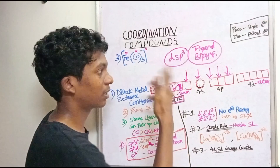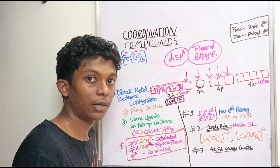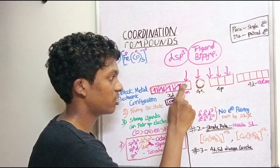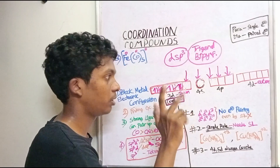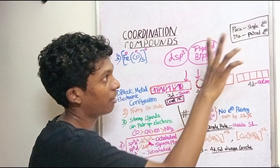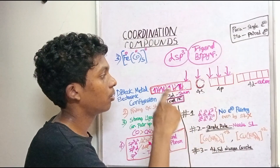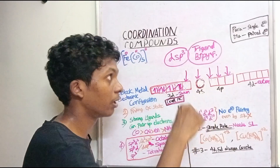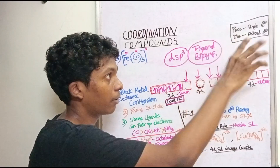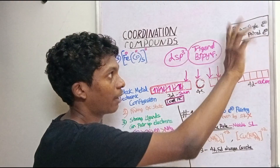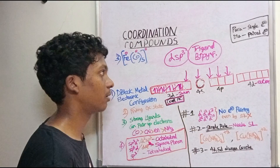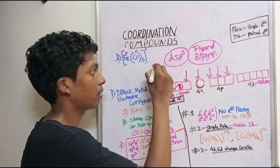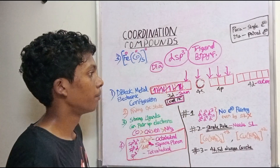In terms of inner orbital or outer orbital, we start with the AC room configuration. Since all electrons are paired, it is diamagnetic — not paramagnetic. Everything is paired, so it is diamagnetic.